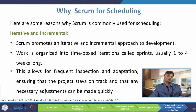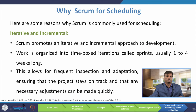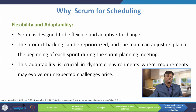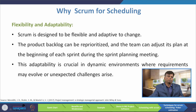The first reason Scrum is used for scheduling is that it is iterative and incremental. Scrum promotes an iterative and incremental approach to development. Work is organized into time-boxed iterations called sprints, usually 1 to 4 weeks long. This allows for frequent inspection and adaptation, ensuring the project stays on track and any necessary adjustments can be made quickly.